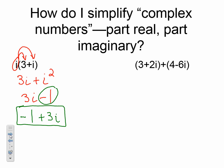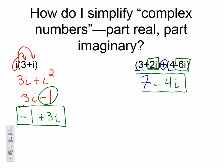Here we have (3 + 2i) plus the quantity (4 − 6i). We are just adding these together, so we combine like terms. 3 plus 4 gives us 7. Then 2i plus negative 6i gives us negative 4i. Our answer is 7 minus 4i. That's all we do — just combine our like terms.